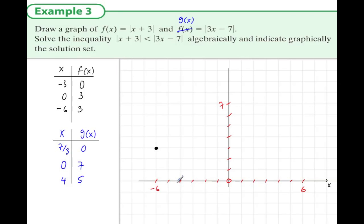It has the point (-6, 3), the point (0, 3), and the point (-3, 0). We take out a ruler and join these dots to make the traditional V-shape of a modular function.